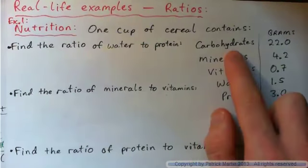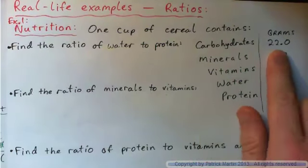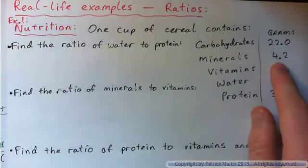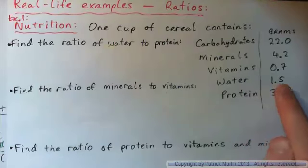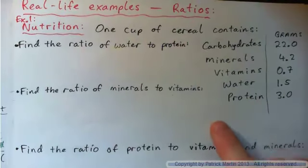One cup of cereal contains 22.0 grams of carbohydrates, 4.2 grams of minerals, 0.7 grams of vitamins, 1.5 grams of water, and 3.0 grams of protein.